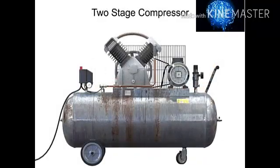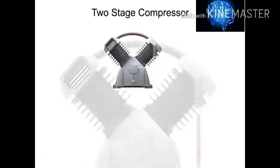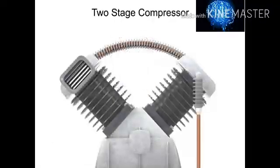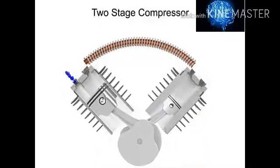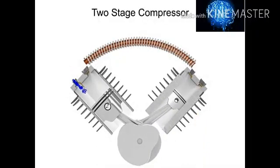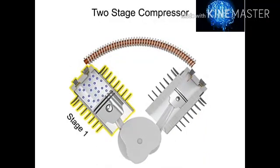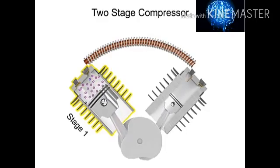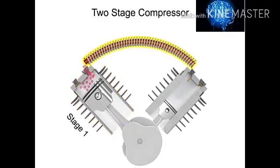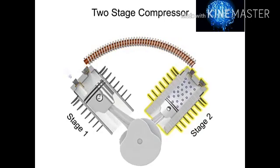To avoid the hazards of overheating and still generate higher pressures, manufacturers make compressors with multiple stages. The air is compressed in the first stage, which is typically the largest stage, then cooled, then compressed in a second stage.